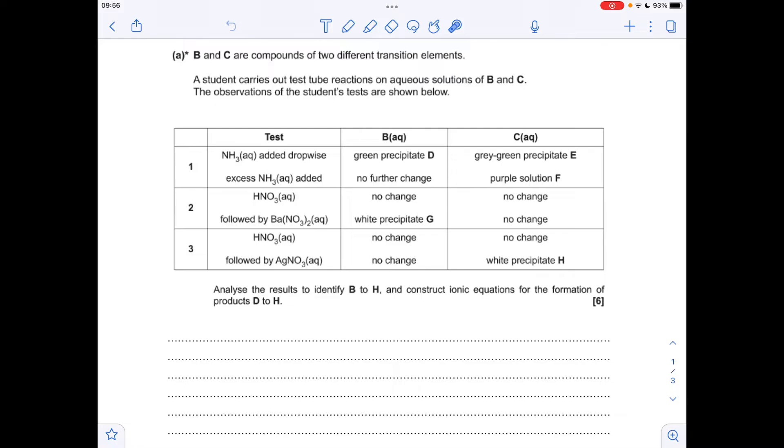Which one's which boils down to what they do in excess ammonia. You can see there's no further change with B, so iron(II) hydroxide is the one that doesn't dissolve in excess ammonia, whereas chromium(III) hydroxide does and forms this purple solution F. In terms of formula, D is Fe(OH)₂, E is Cr(OH)₃, and F is [Cr(NH₃)₆]³⁺.